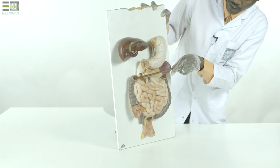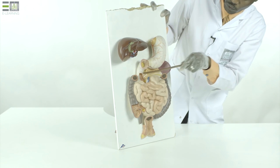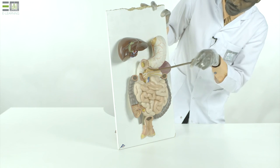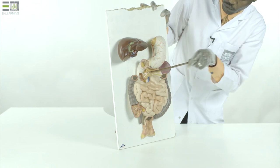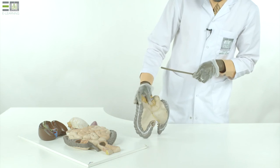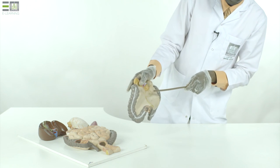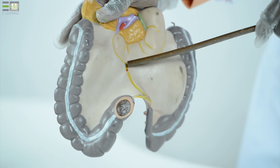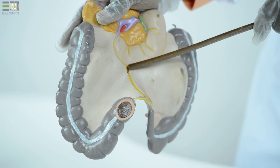The transverse colon between the two colic flexures has a mesentery called transverse meso-colon. In addition, the small intestine is attached to the posterior abdominal wall by a mesentery called mesentery proper.